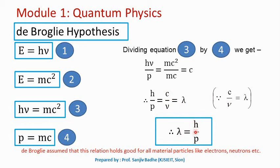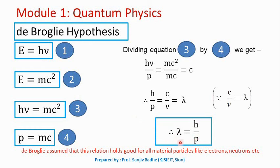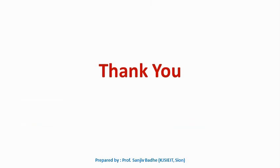So λ = h/p. De Broglie said: if E = hν (Planck's relation) is correct and E = mc² (Einstein's relation) is correct, then λ must equal h/p. This result was derived for the photon, and De Broglie said that if it is true for the photon, it must be true for all types of particles — like electrons, neutrons, and any other particle. This is the simple explanation given in support of the De Broglie relation λ = h/p.